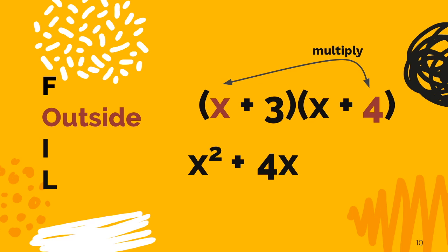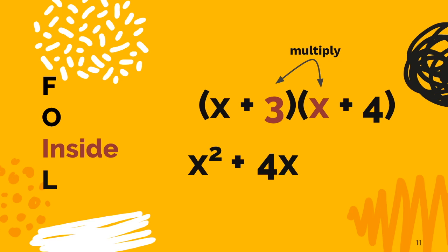Now that we've done the outside, let's turn to the letter I, which stands for inside. So that will help us remember to be sure to multiply the 3 times the x, in this case 3 times the x, which gives us 3x.